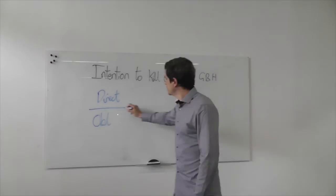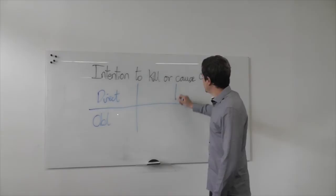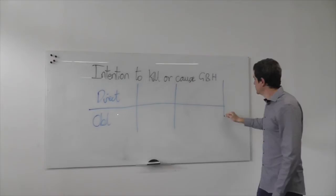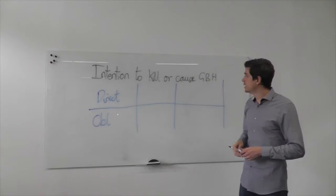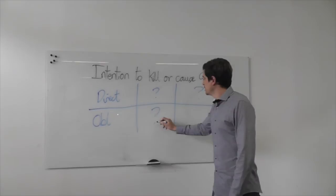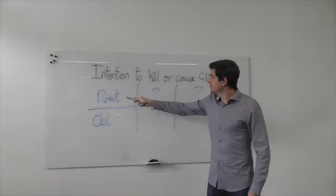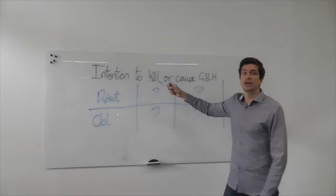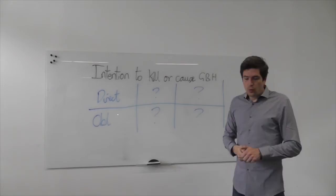So in that way, we have two options. We also, within the mens rea of murder, have these two varied results that the defendant can intend in order to be liable for the offense or at least to satisfy the mens rea. So essentially what we have are four ways in which the defendant can satisfy the mens rea of murder: either by a direct intention to kill, a direct intention to cause grievous bodily harm, an oblique intention to kill, or an oblique intention to cause grievous bodily harm.